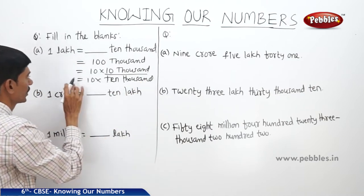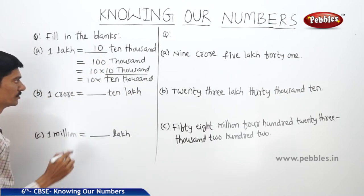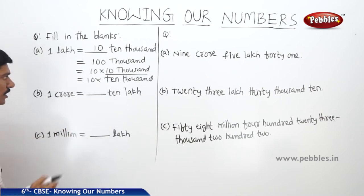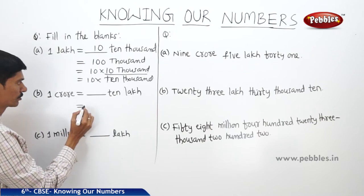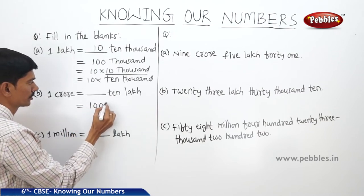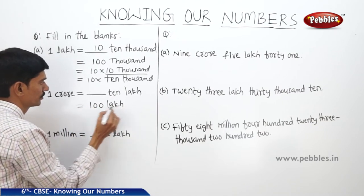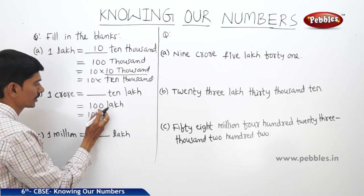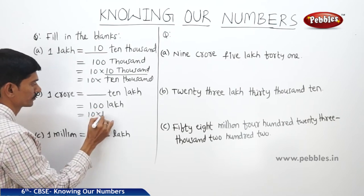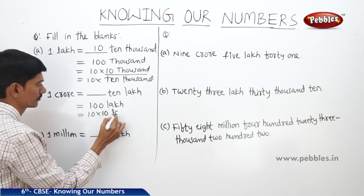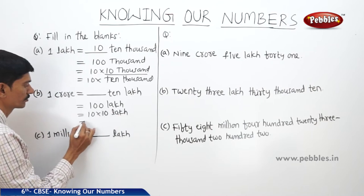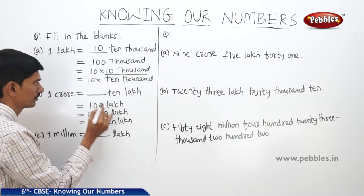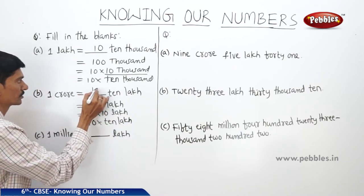The next one: 1 crore equals how many 10 lakhs? We know that 1 crore equals 10,00,00,000. This can be written as 10 × 10,000,000. So 1 crore equals 10 ten-lakhs.